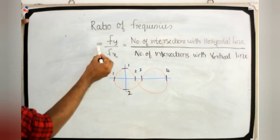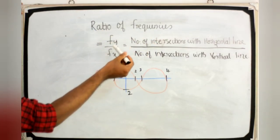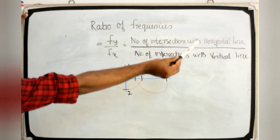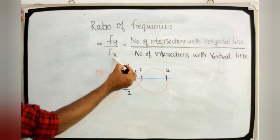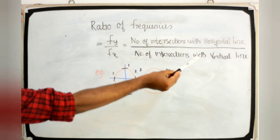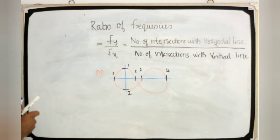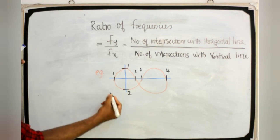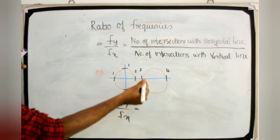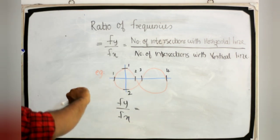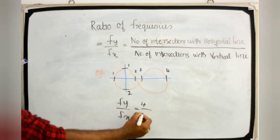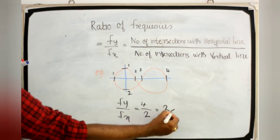The frequency ratio is: fy/fx, where fy is the number of intersections with the horizontal line and fx is the number of intersections with the vertical line. For example, if the horizontal line intersections are 4 and vertical line intersections are 2, then fy/fx = 4/2 = 2.